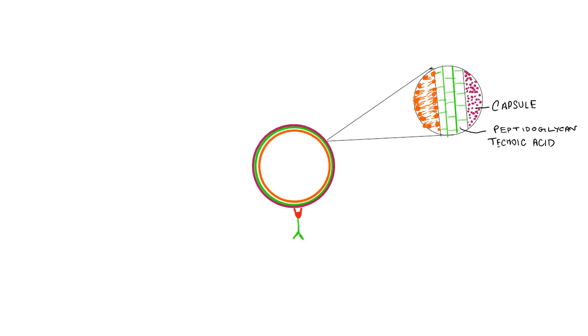There is a cell wall associated protein known as Protein A, which reduces the effectiveness of the host immune system by binding with IgG antibody. There is another factor which sometimes associates with the cell wall and sometimes remains free.